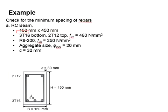You have three T16 at the bottom, two T12 at the top, and the specified yield strength is 460. Your shear link is R8-200 and the maximum aggregate size is 20, and the concrete cover is 30.